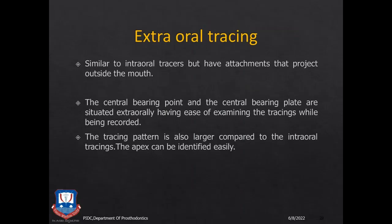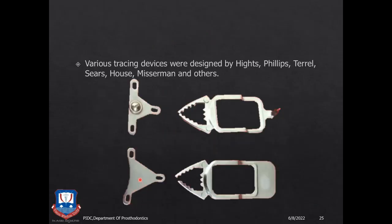Coming to the external tracing devices: they are essentially similar to the internal tracing devices, but the central bearing plate assembly is outside the patient's mouth — it is attached by a fork to the exterior of the wax rims, protruding out of the mouth. It also has a larger central bearing plate, so the tracing arrow is larger in size and it is easier to identify the apex. The styli attached to the upper or lower rim makes a marking on the central bearing plate of this assembly.